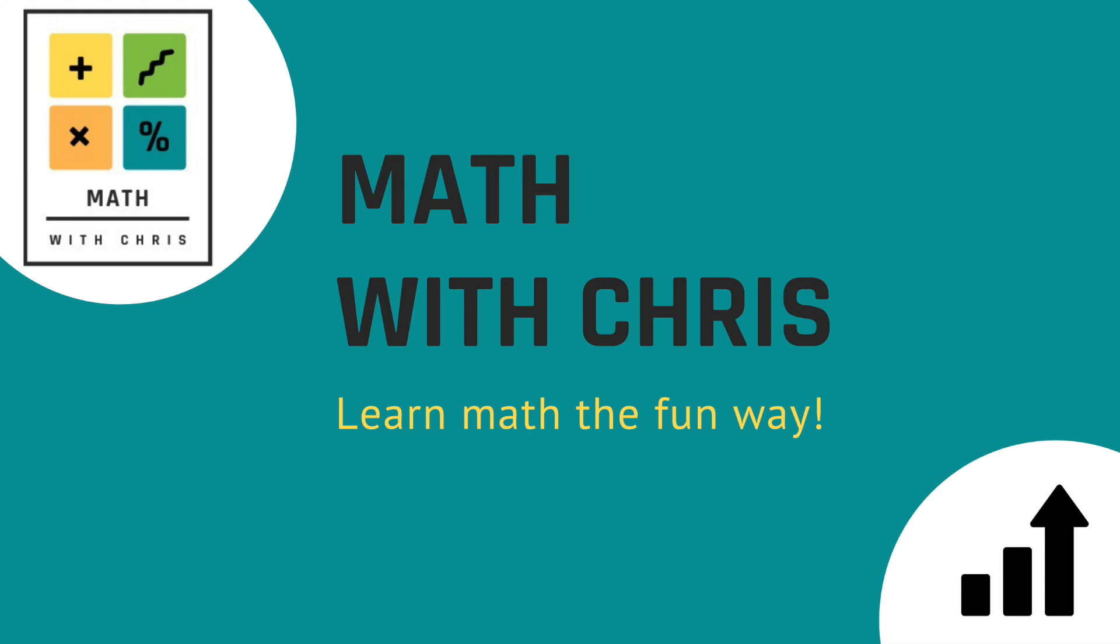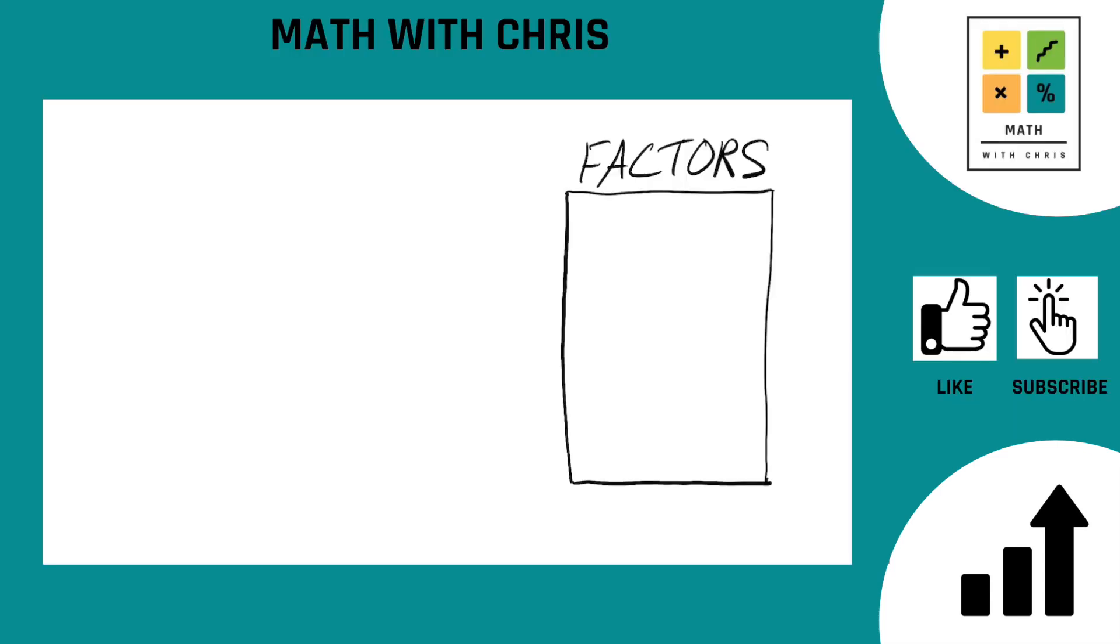What's going on everybody, Math with Chris. More factors using factor trees today. We're going to dominate the number 90. 90, you ain't got nothing on us.